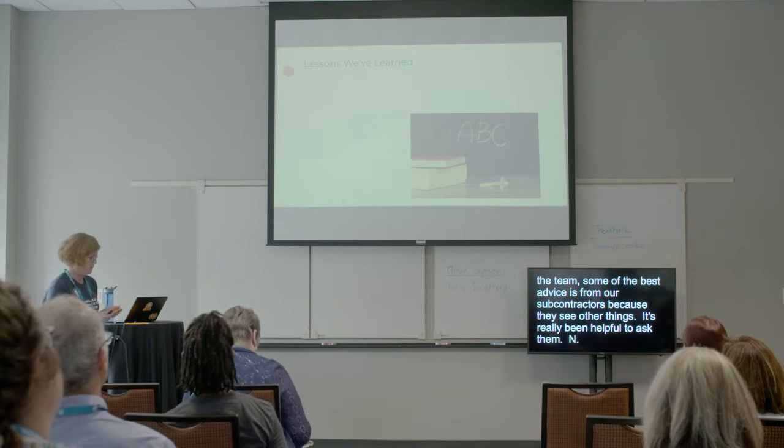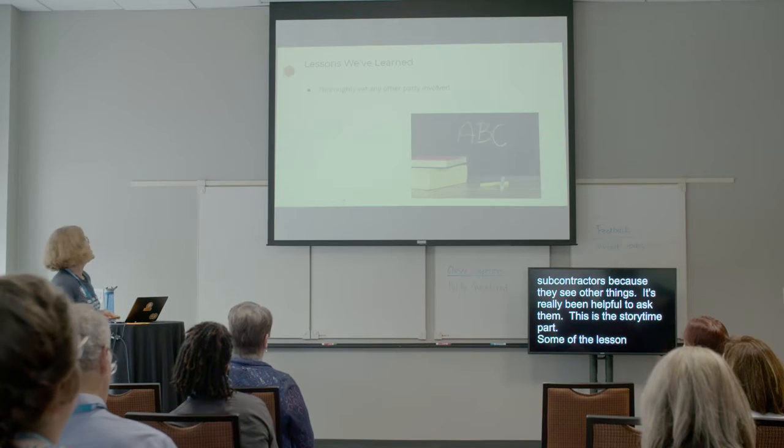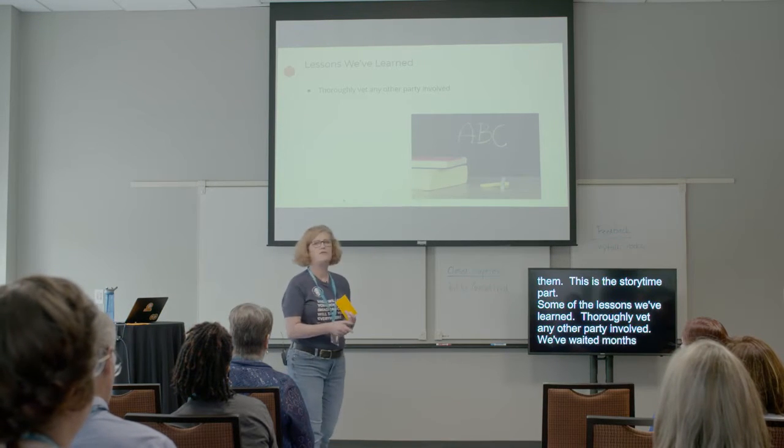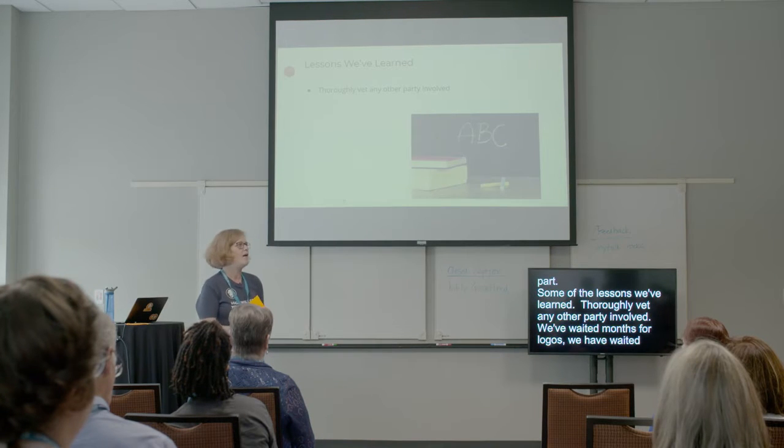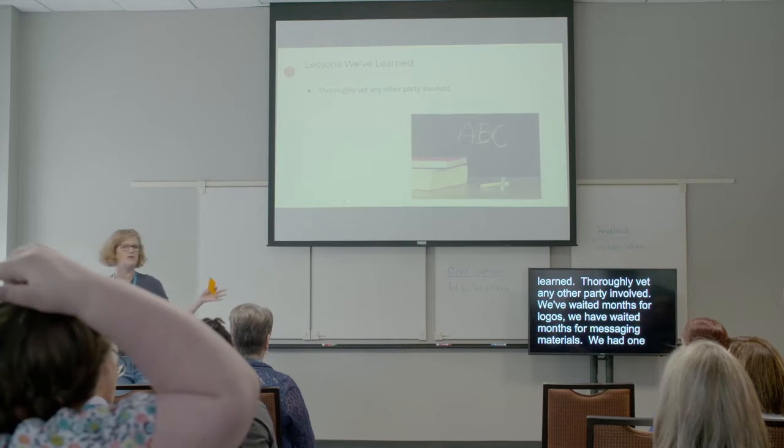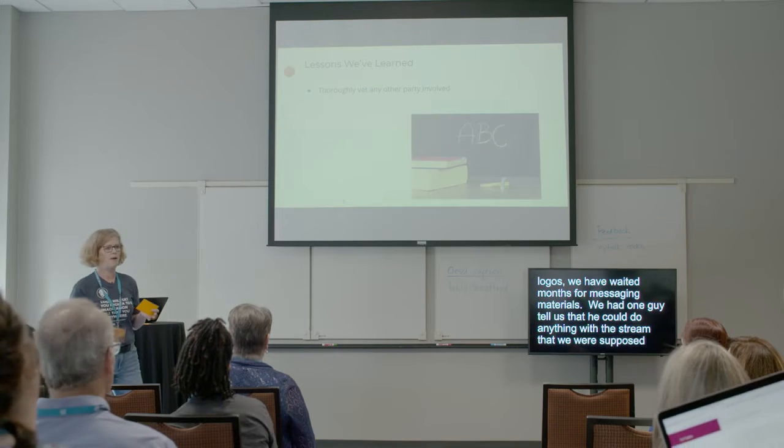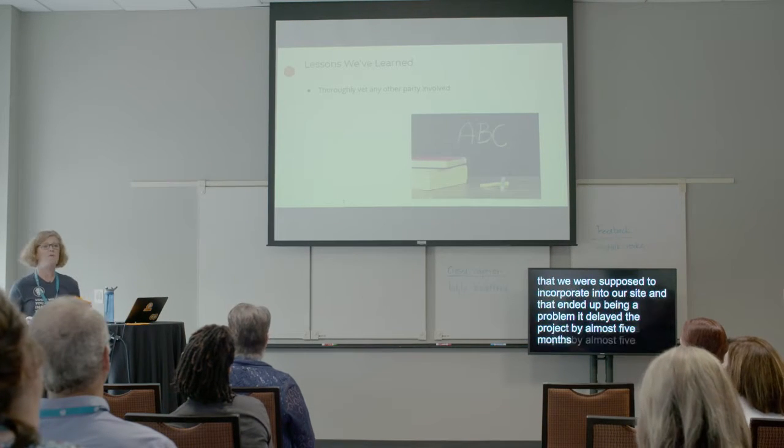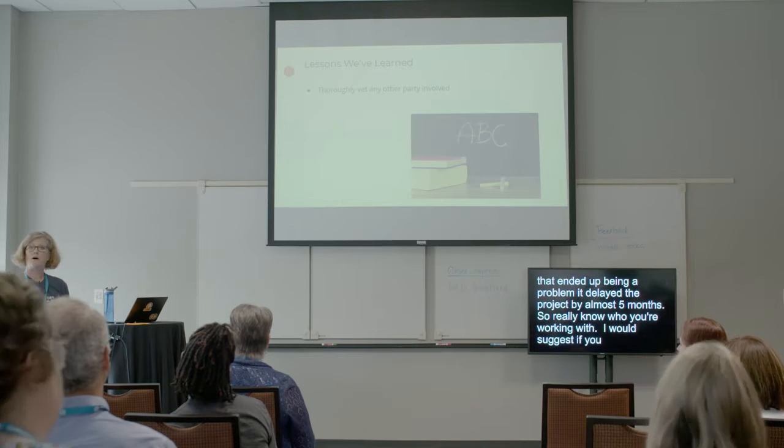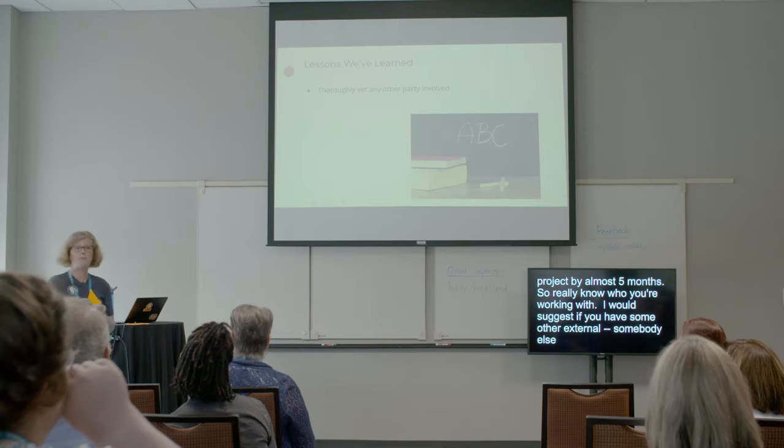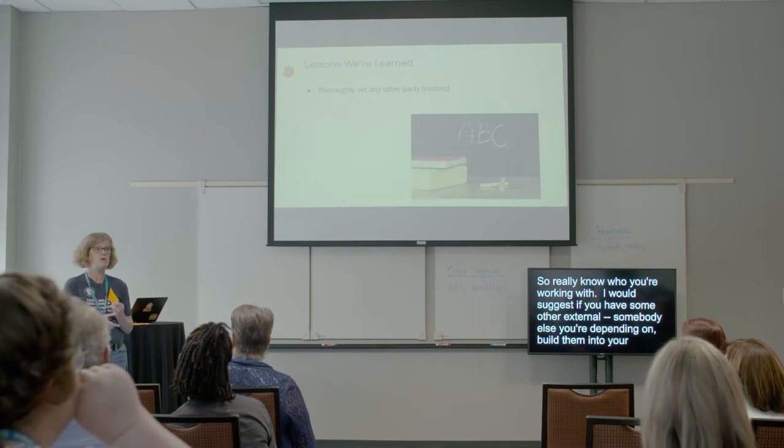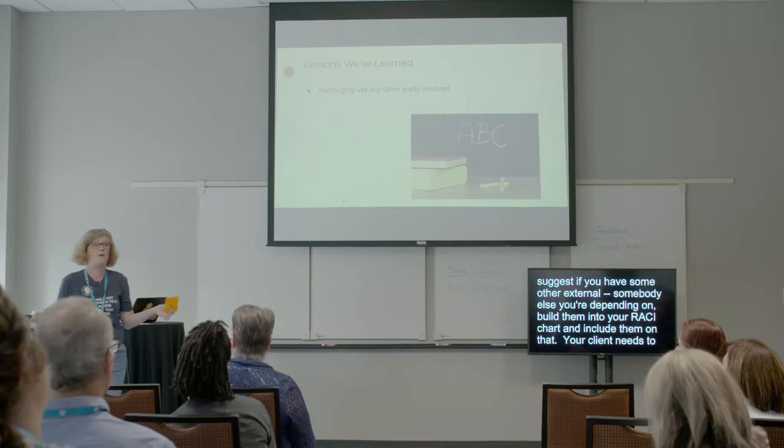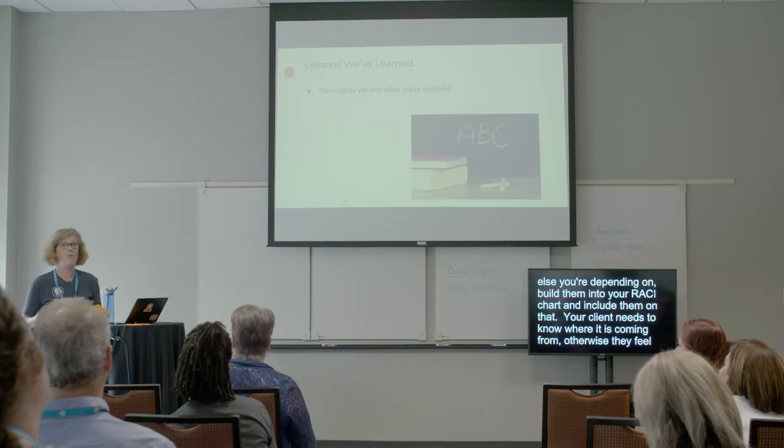So this is the story time part. Some of the lessons we've learned. Thoroughly vet any other party involved. We've waited months for logos. We have waited months for marketing messaging materials. We had one guy tell us that he could do anything with the stream that was supposed to incorporate into our site. And that ended up really being a problem. It delayed the project by almost five months. So really know who you're working with. I would suggest if you have some other external, that somebody else you're depending on, build them into your RACI chart and include them in that. Because your client needs to know, because they're the ones probably paying for the other company. They need to know where it's coming from. Otherwise, they just feel like they're being tossed between two people. And you don't want them to be that way.